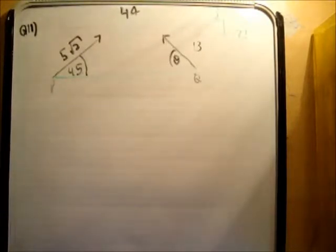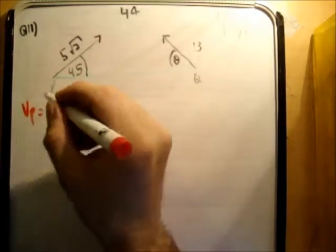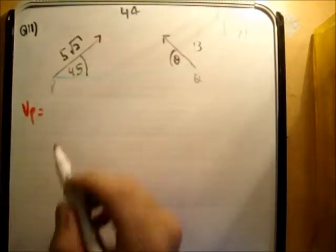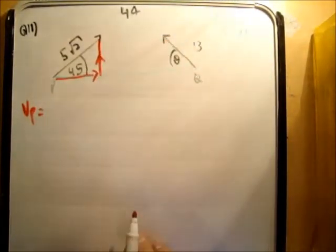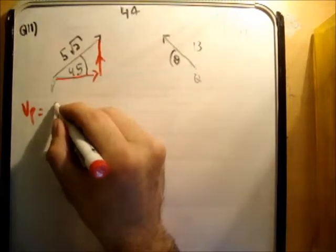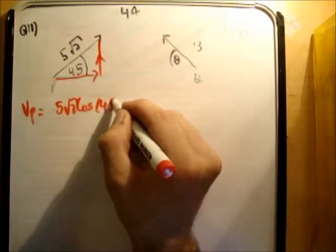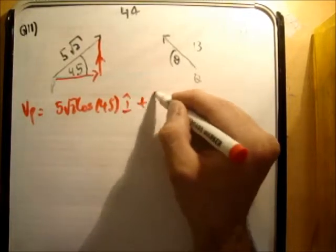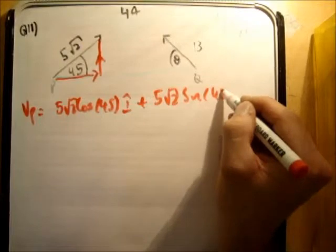So what we know is that VP is equal to, and we can just resolve this. So we get V P sub x and V P sub y here like that. So it's going to be 5 root 2 cos 45 I hat plus 5 root 2 sin 45 J hat.